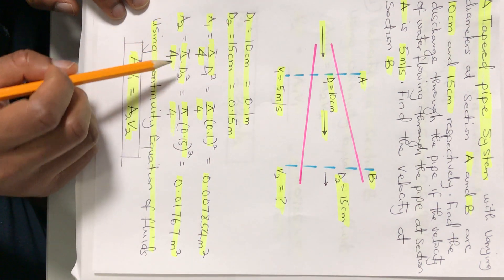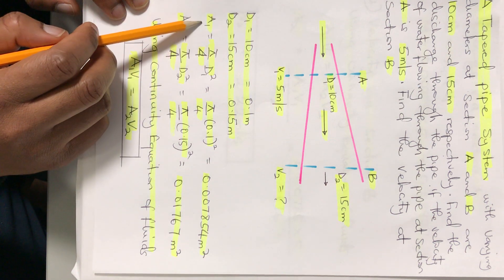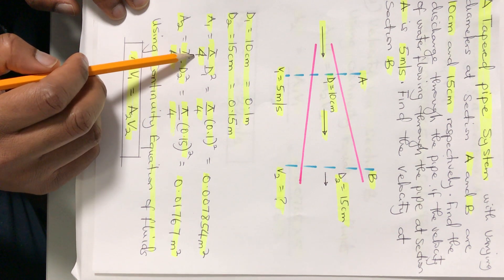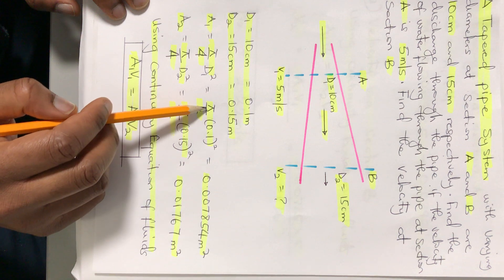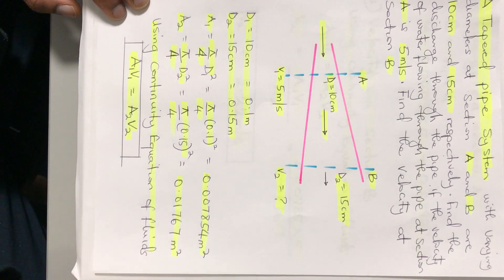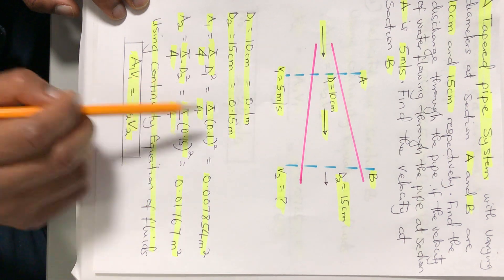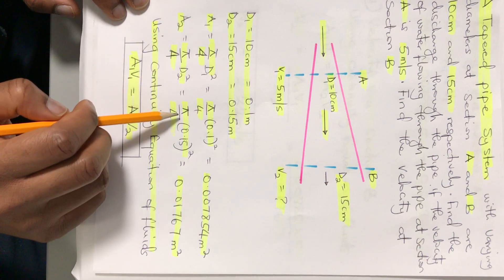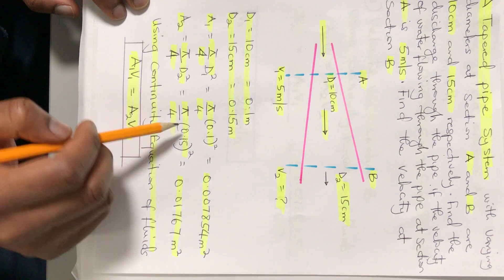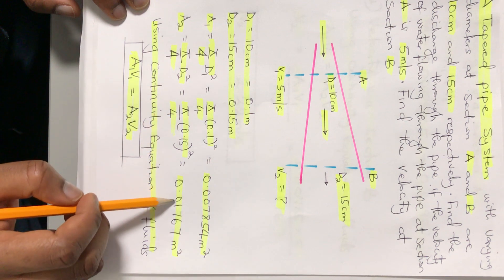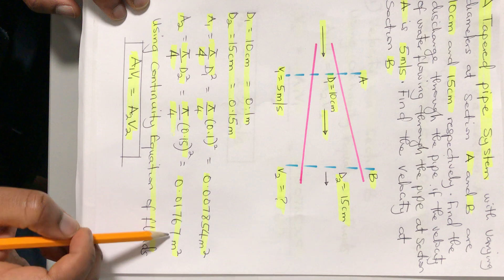Area 1 equals π d² over 4, which gives us π times 0.1 squared over 4, equaling 0.007854 meters squared. Area 2 equals π d² over 4, using diameter 2, giving us π over 4 multiplied by 0.15 squared, which equals 0.01767 meters squared.